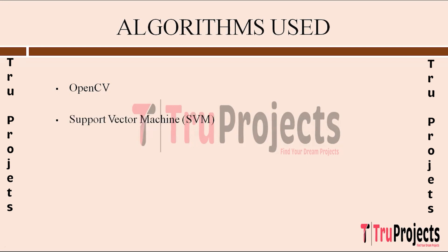SVM, or Support Vector Machine, is a powerful supervised learning algorithm used for classification tasks including facial recognition. SVM works by finding the optimal hyperplane that best separates different classes of data points in a high-dimensional space. It maximizes the margin between classes, effectively reducing the risk of misclassification and improving generalization performance. In this project, SVM is suitable for facial recognition because it can efficiently handle high-dimensional feature vectors extracted from facial images.